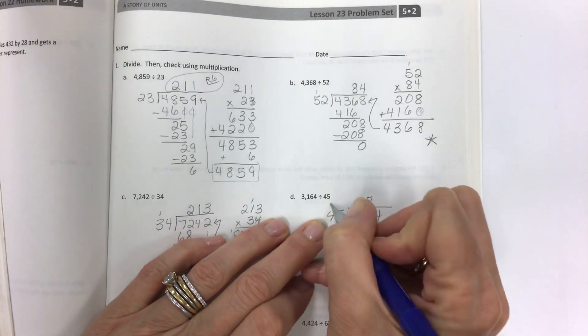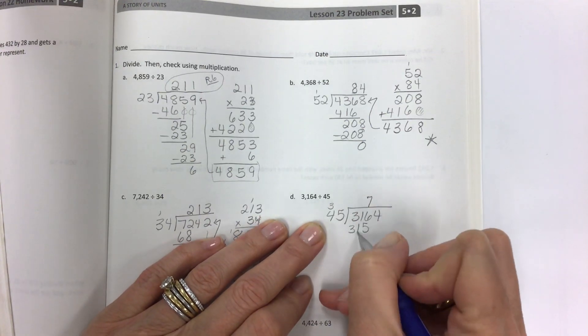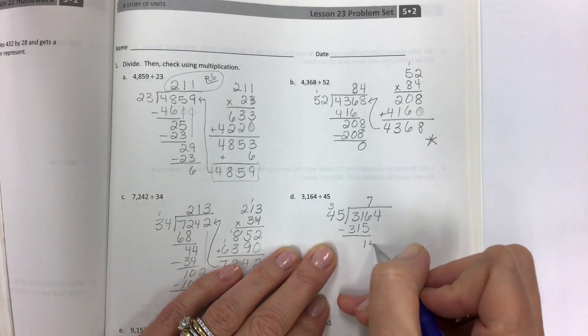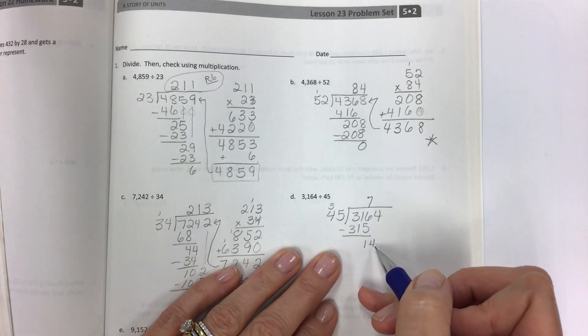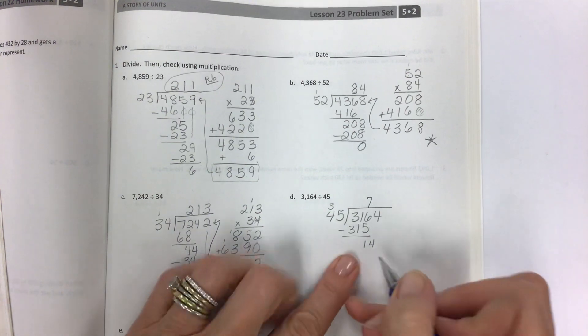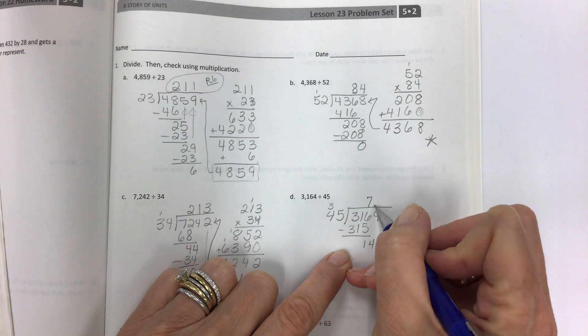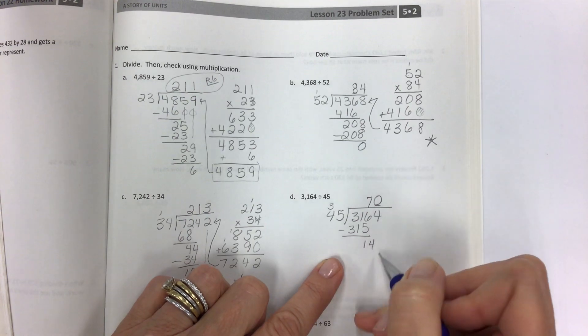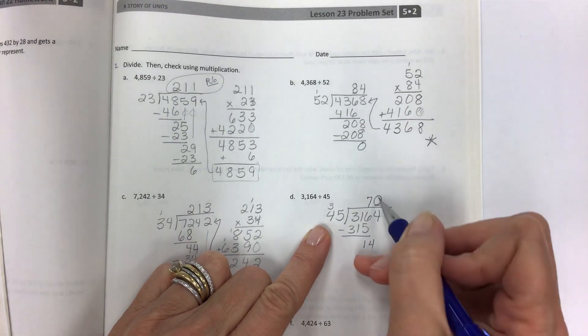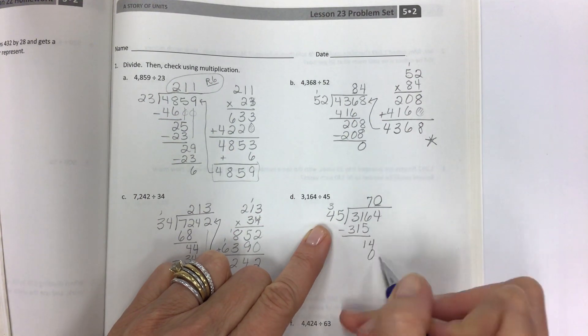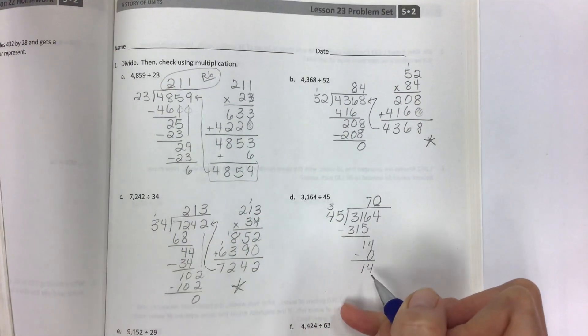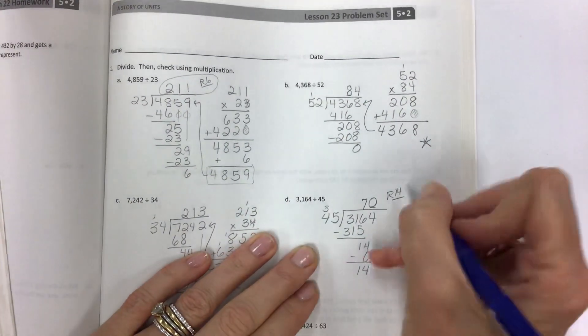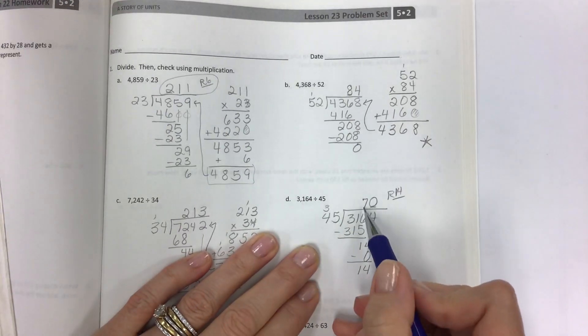7 times 5 is 35. And then 28, 29, 30, 31. We just eked in there with 1 to spare. And then 4 comes down. We talked about this in the previous lesson. What do you do when this is so small you can't divide with it? You still have to fill in a digit here. How many 1's are divisible by 45 when you only have 4? 0. 0 times 45 is 0. So 14 minus 0 is 14. And now I have my remainder of 14. It's 70.